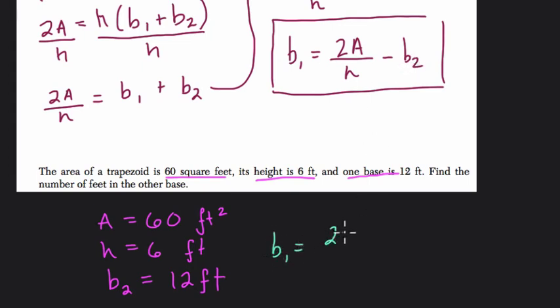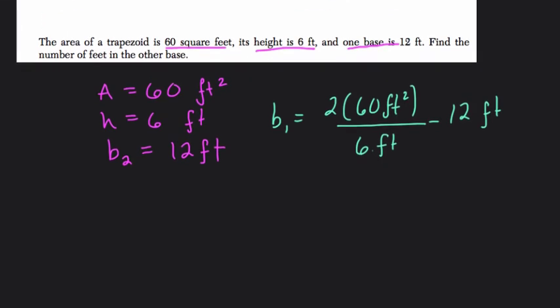So B1 is going to equal 2 times 60 feet squared over, divided by, 6 feet, minus 12 feet, right here. So here, when we solve for B1, what's going to happen?